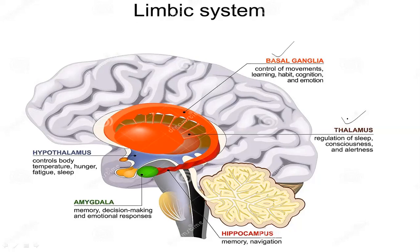For MBBS-level study, the limbic lobe includes the cingulate gyrus, parahippocampal gyrus, hippocampus, and dentate gyrus — located between the hippocampus and parahippocampal gyrus. These are additional components of the limbic system studied at advanced levels.